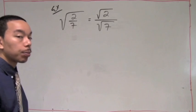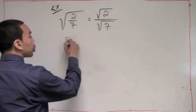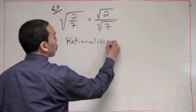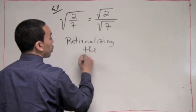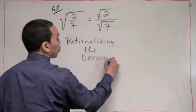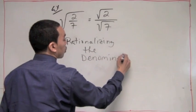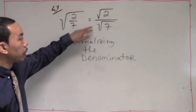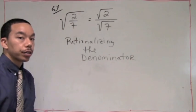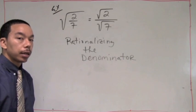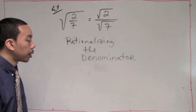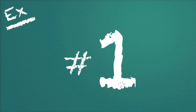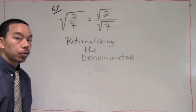The steps to simplify is called rationalizing the denominator. Rationalizing the denominator allows us to get the radical out of the denominator and thus have it considered simplified. Let's try an example.